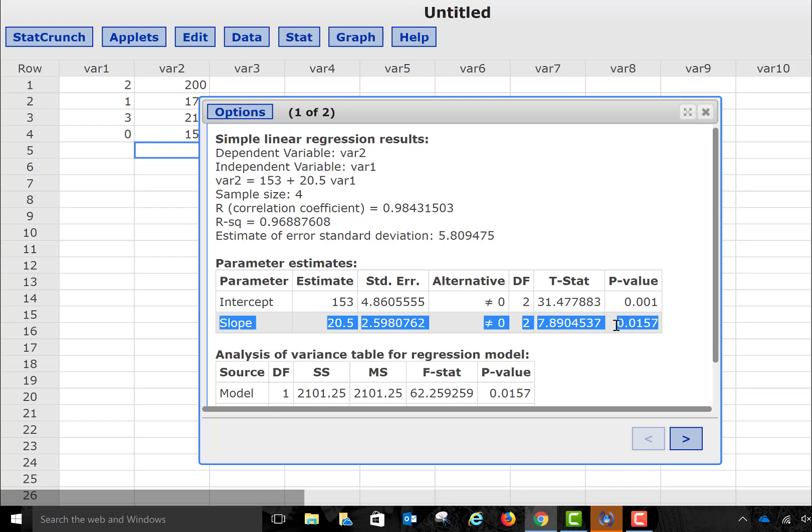Now, if my significance level is .01, my p-value is larger than that, which indicates that I could not reject the null hypothesis. And so I don't have evidence to support the alternative, which is the same results that we got when we checked for the correlation using the critical value method also.